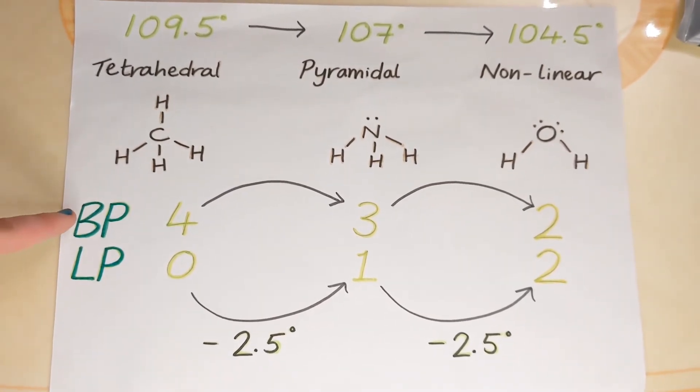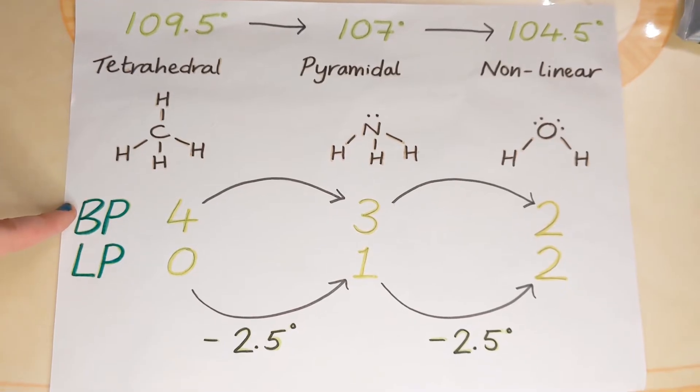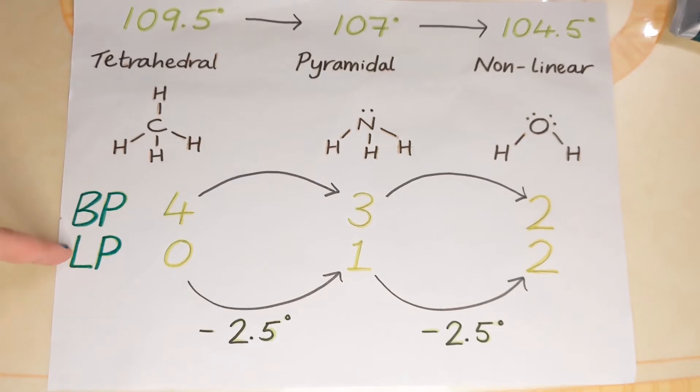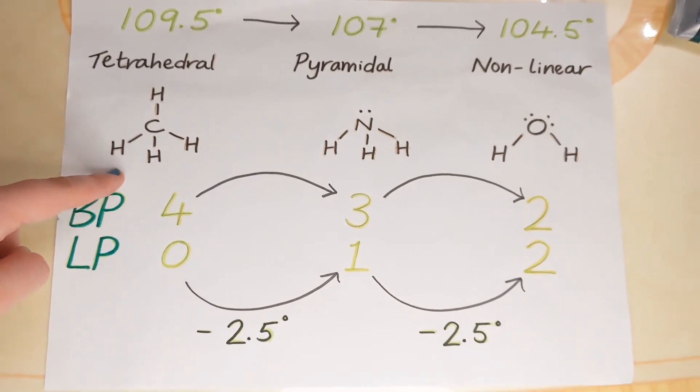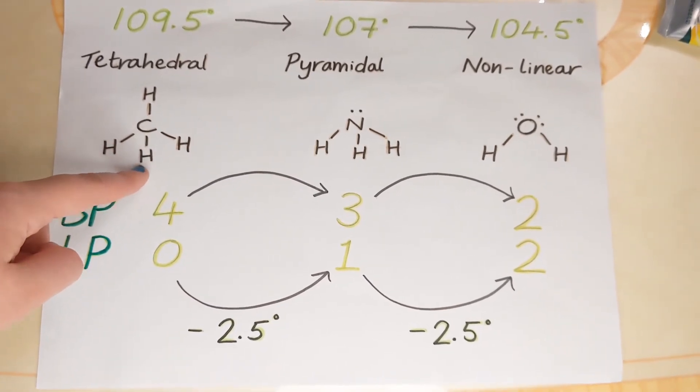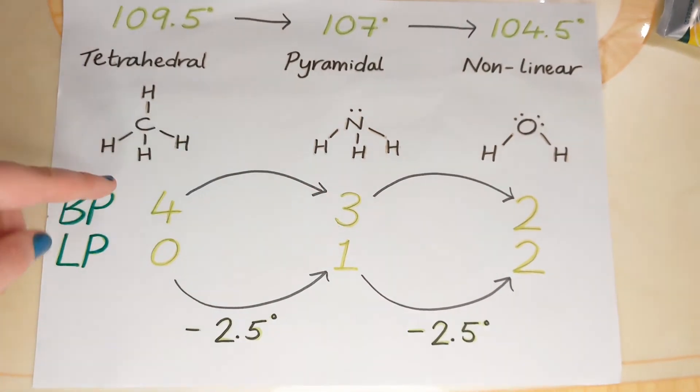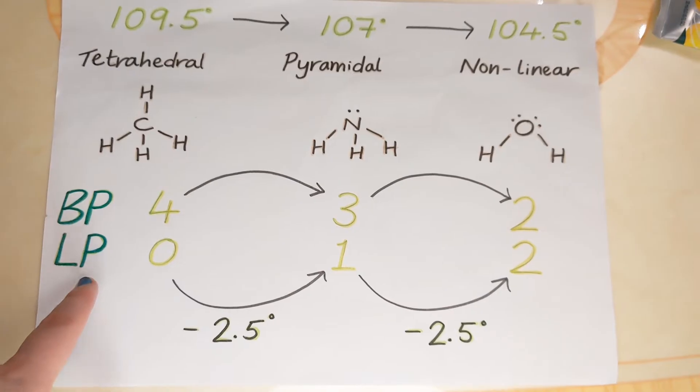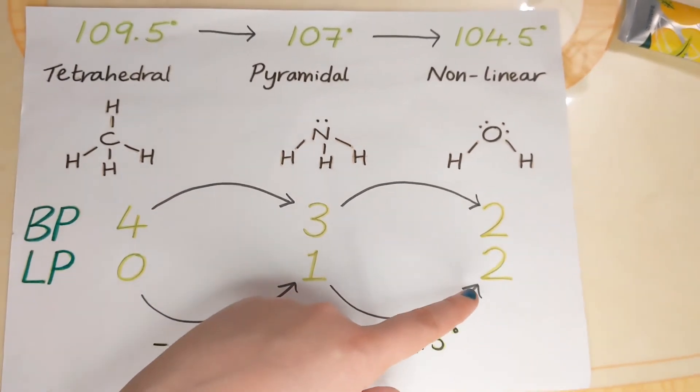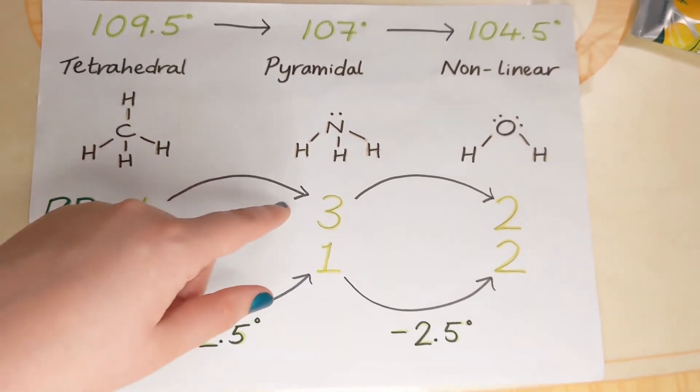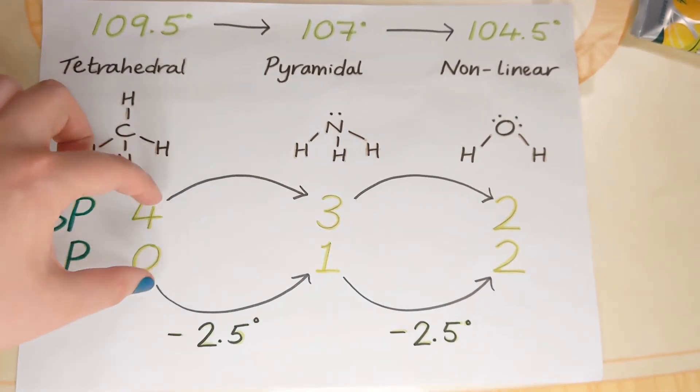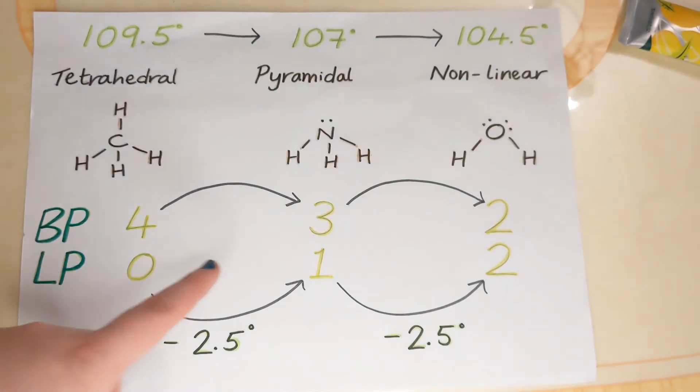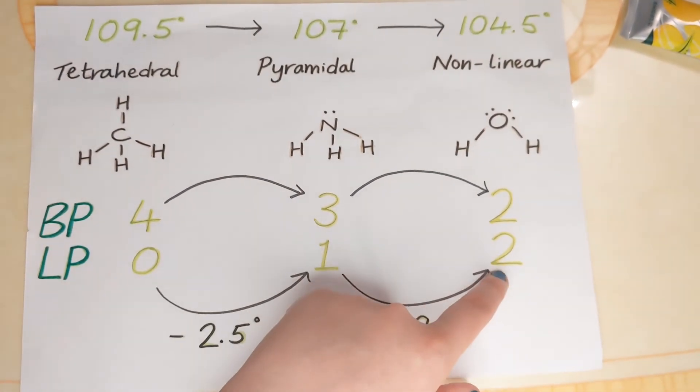Now I've written down here BP, that stands for bonding pairs, and LP, that stands for lone or non-bonding pairs. And we can see a pattern. So as we go from methane to ammonia, we've decreased the number of bonding pairs by one, but we've gained a lone pair each time. So we've still got the same number of electron pairs, there's four in each molecule, but we're gaining one extra lone pair each time.